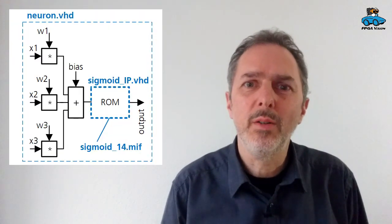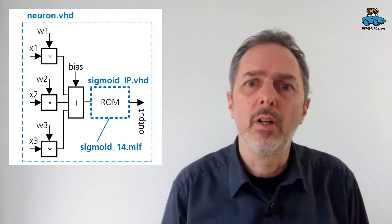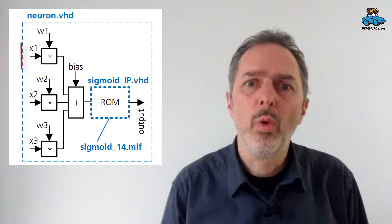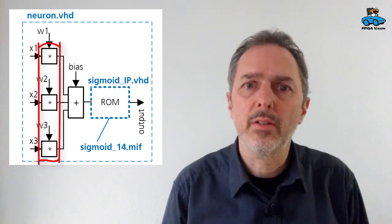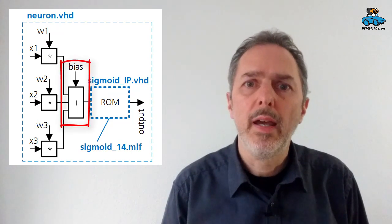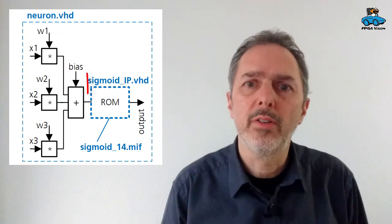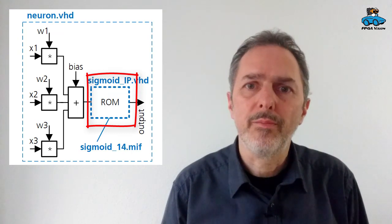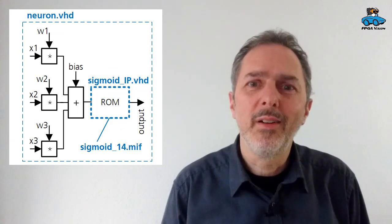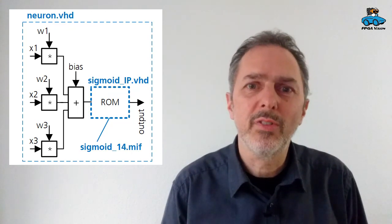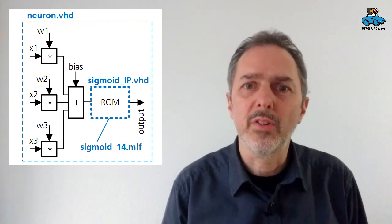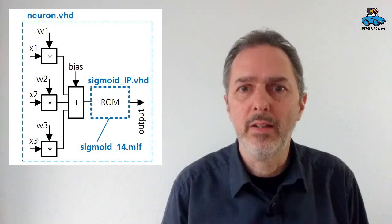Here is the image from that video. So we have a module where we get the input signals. Then we multiply with the factors, we add the bias, and we have a sigmoid function in a lookup table. However, the structure we have here is much larger. So we have 49 inputs or 37 inputs, but the basic principle is the same.